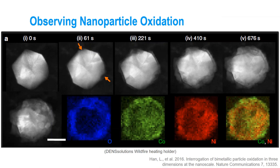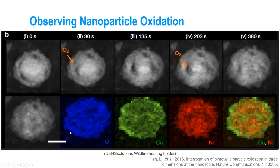Here is another example from data acquired at Brookhaven National Lab. In this case they were looking at nanoparticle oxidation — a bimetallic cobalt-nickel nanoparticle. You can see clearly in the EELS spectra that early in the oxidation process, there is an oxide shell forming on this nanoparticle. Then later, looking at another particle, you can see that the oxidation has proceeded and the entire particle has been oxidized, and there are even small voids in this particle.